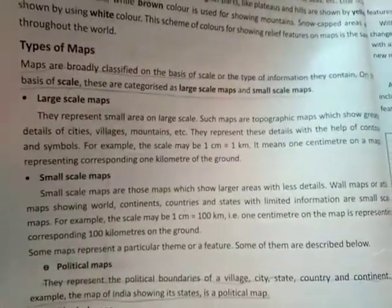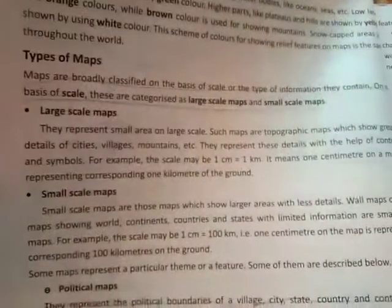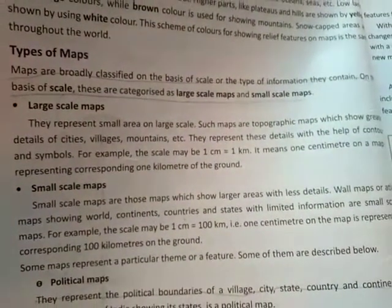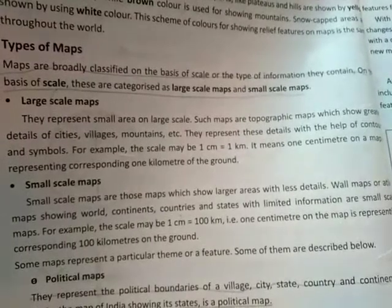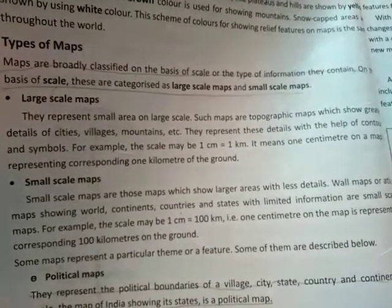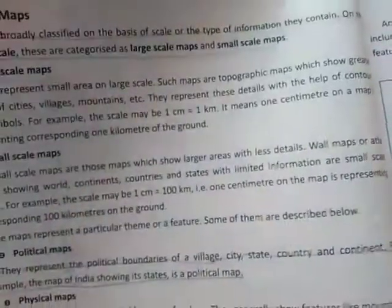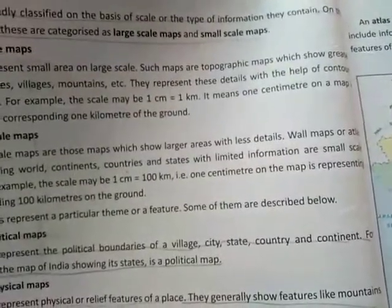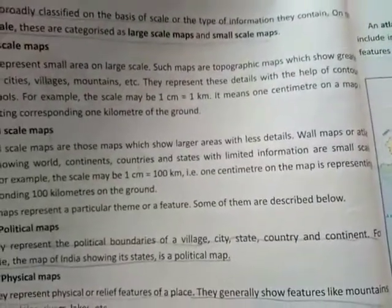Now, students, we have different types of maps: large scale, small scale, political, physical, and thematic. Maps are broadly classified on the basis of scale or the type of information they contain. Scale means how we are representing the map — for example, 10 kilometers equal to 1 centimeter. They are categorized as large scale maps and small scale maps.